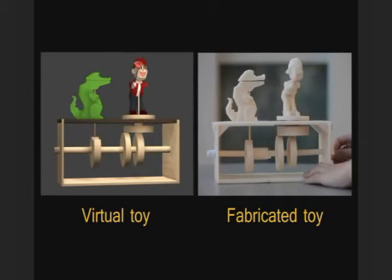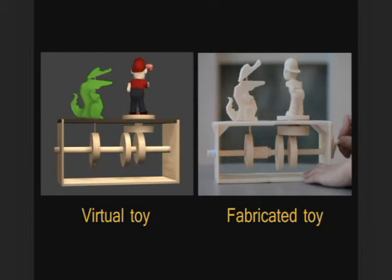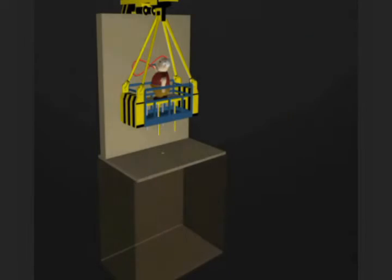Finally, we compare the motion between the virtual and fabricated toy. We obtain a good match, showing that the synthesized toy has been physically realized. This example shows how editing the input motion affects the output.